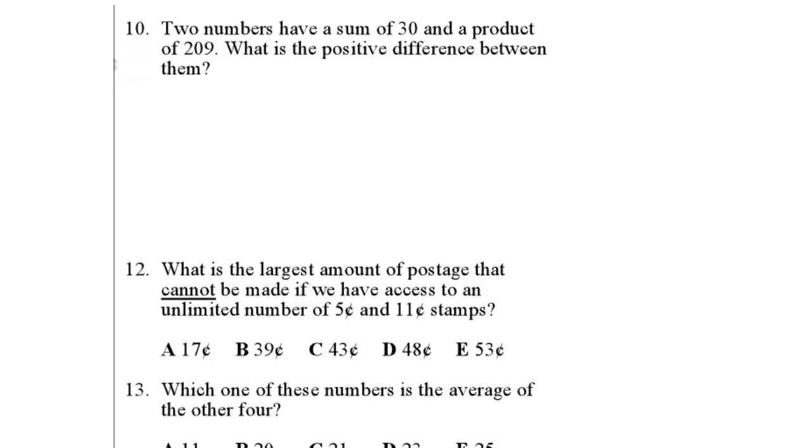Practice Problems 2, question number 10. Two numbers have a sum of 30 and a product of 209. What is the positive difference between them? First we need to find these two numbers so that we can find the positive difference, or the sum or product, or whatever the question is asking for.